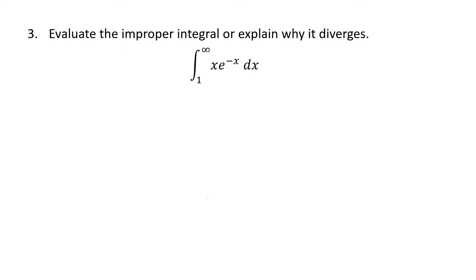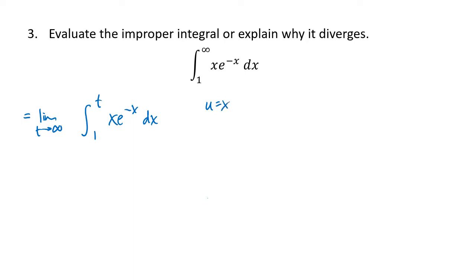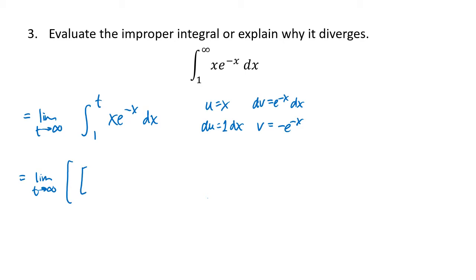Next up — again, the very first step is to rewrite this as a limit: the limit as t goes to infinity of the integral from 1 to t of x e to the minus x dx. We're going to hold that limit off to the side while we focus on doing this integral. This one is unfortunately going to require integration by parts. Our parts are u equals x, dv equals e to the minus x dx, du will be 1 dx, and then v will be the antiderivative of e to the minus x, which is minus e to the minus x.